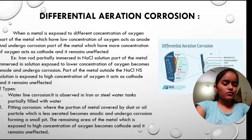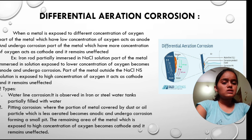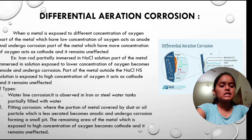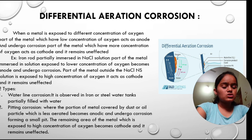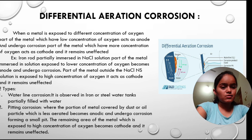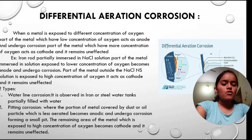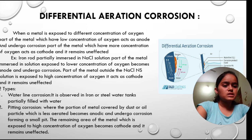There are two types of differential aeration corrosion: waterline corrosion and pitting corrosion. Waterline corrosion is observed in iron or steel water tanks partially filled with water. In pitting corrosion, the portion of the metal covered by dust or oil particles, which is less aerated, becomes anodic and undergoes corrosion forming a small pit. The remaining area of the metal exposed to high concentration of oxygen becomes cathode and remains unaffected.